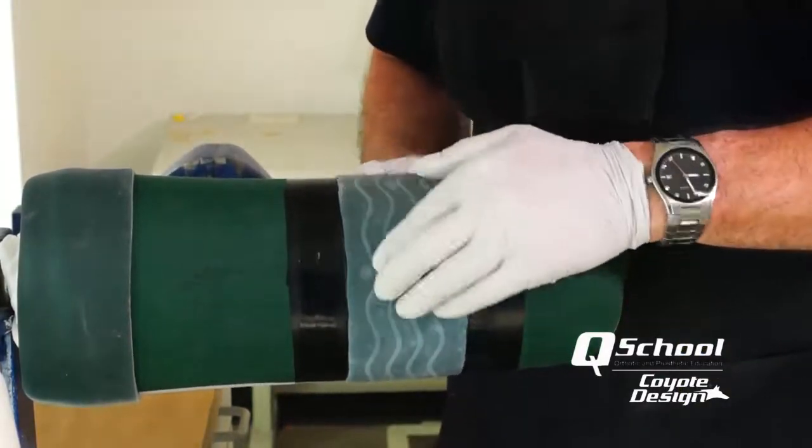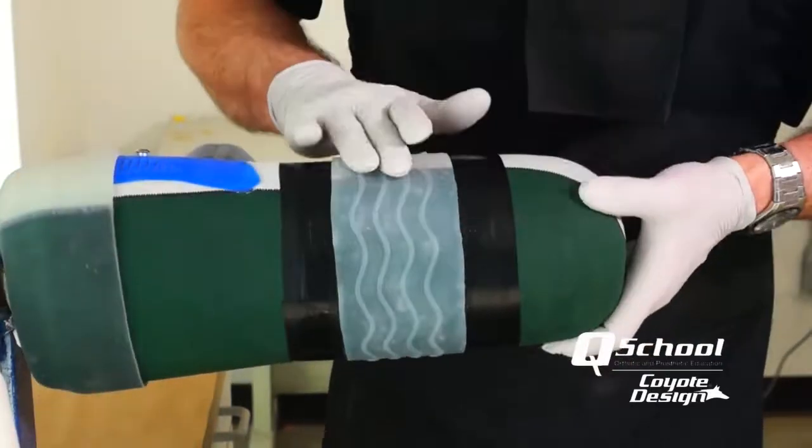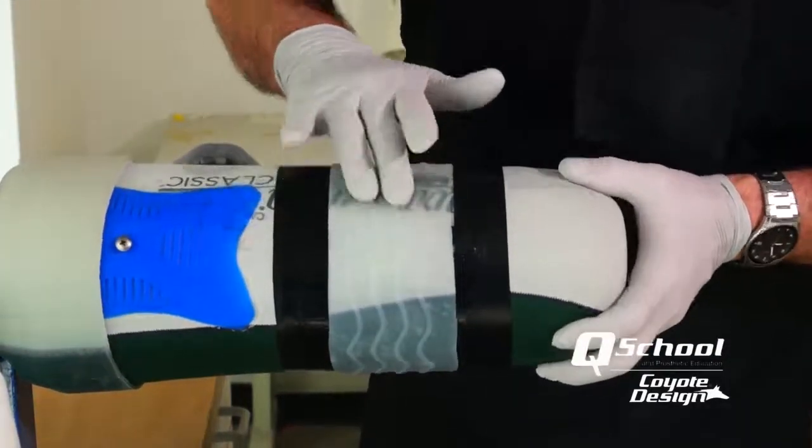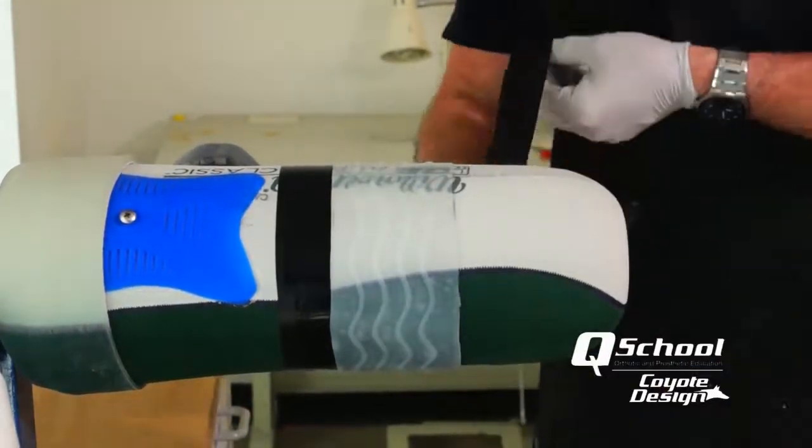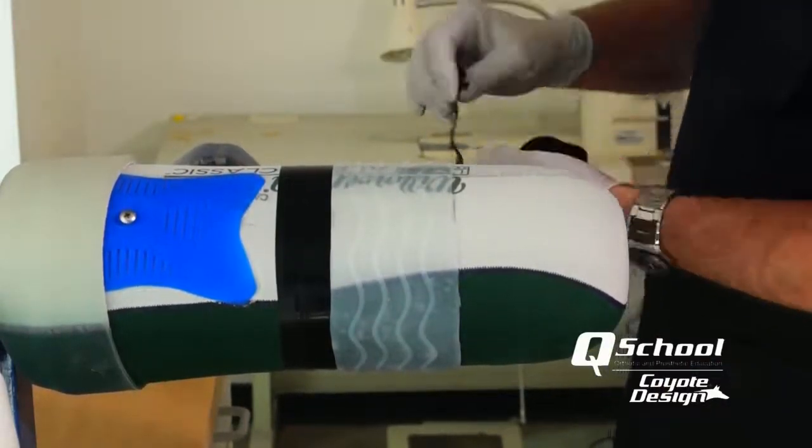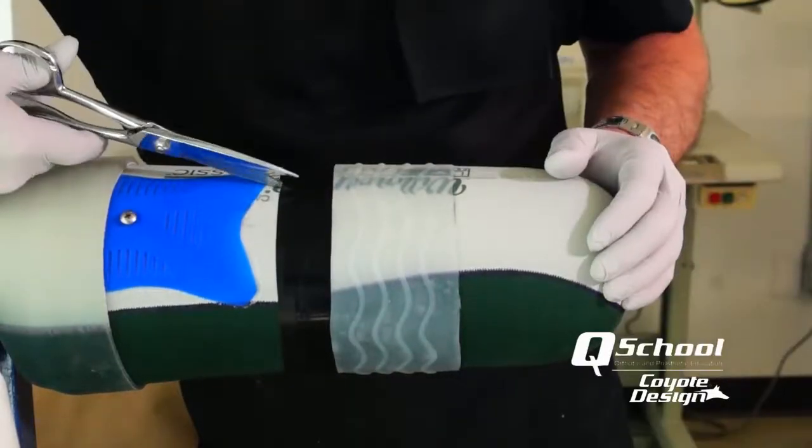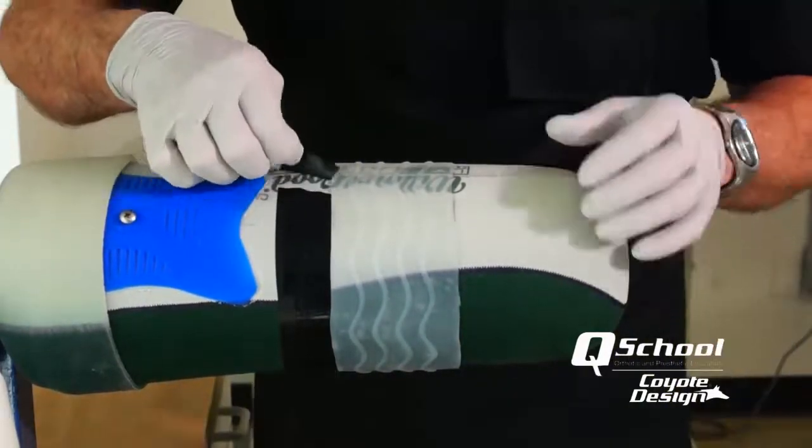A couple little air pockets and that's it. All right, that looks really good. Once we're comfortable with where the seal band is sitting, let's go ahead and take our tape off. Just slide your scissors underneath there and carefully cut your tape. And pull that away.